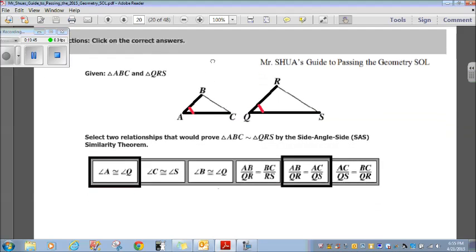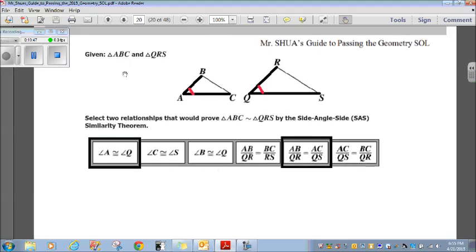Directions, click on the correct answers. Okay, given triangle ABC and triangle QRS. Select two relationships that would prove triangle ABC is similar to triangle QRS by the side angle side similarity theorem. Of course, with the side angle side similarity theorem, you have to prove this side similar to this side, this angle congruent to that angle, this side similar to this side.